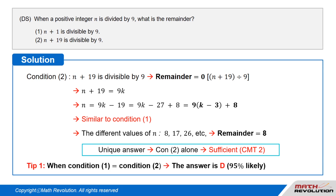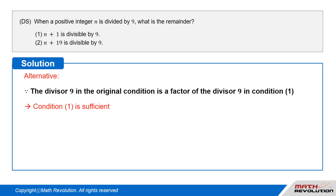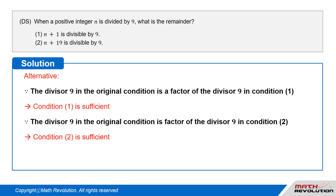According to Tip 1, it is about 95% likely that D is the answer when the value of condition 1 equals the value of condition 2. Tip 1 is really important for solving GMAT Math DS questions and often appears on the exam. As another shortcut: the divisor in the original condition is 9, and the divisor in condition 1 is also 9. Since 9 is a factor of 9, condition 1 is sufficient. Similarly, the divisor 9 in the original condition is a factor of the divisor 9 in condition 2, so condition 2 is also sufficient.